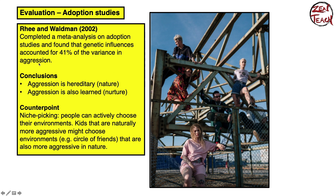The Rhee and Waldman study from 2002 is an analysis looking at how much your genes or your environment contribute to your natural level of aggression. They found that 41% of aggression can be explained by the genes you carry — your nature — and 59% is explained by your environment — your nurture, your parents, your family, and your friends. This is great support for the interactionist approach, showing that both can influence you quite significantly.